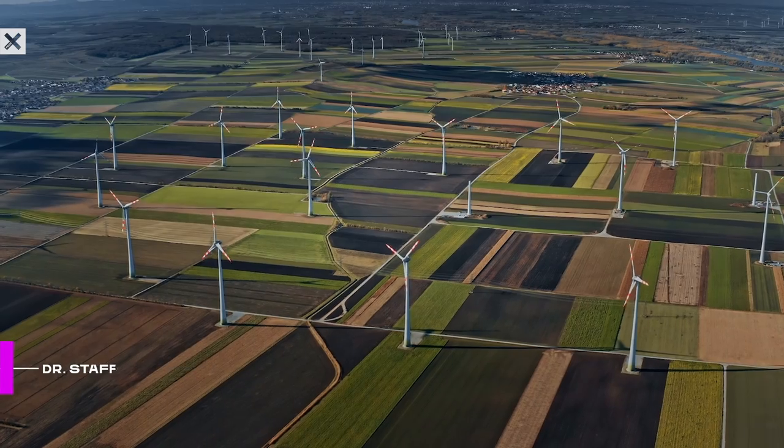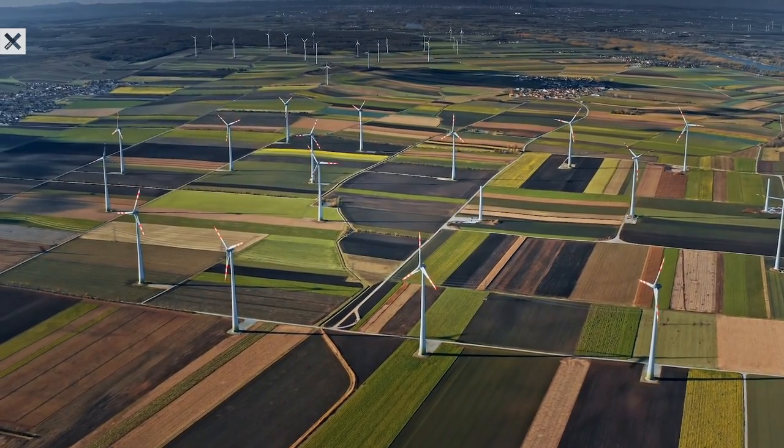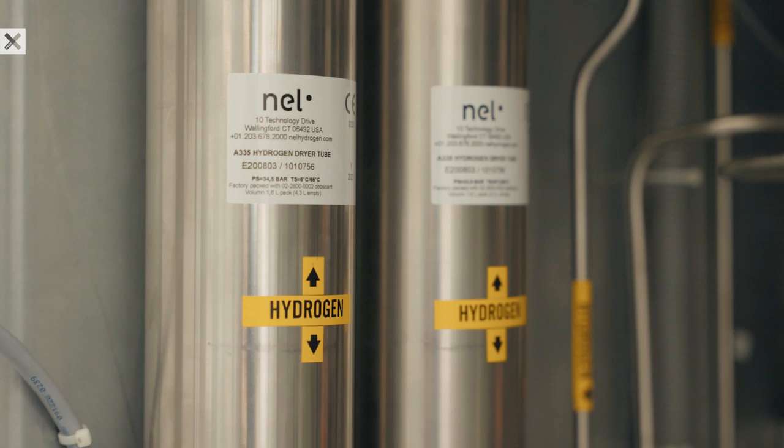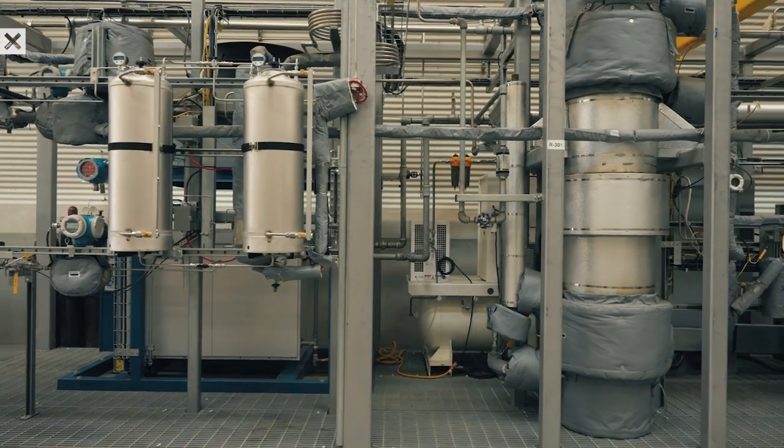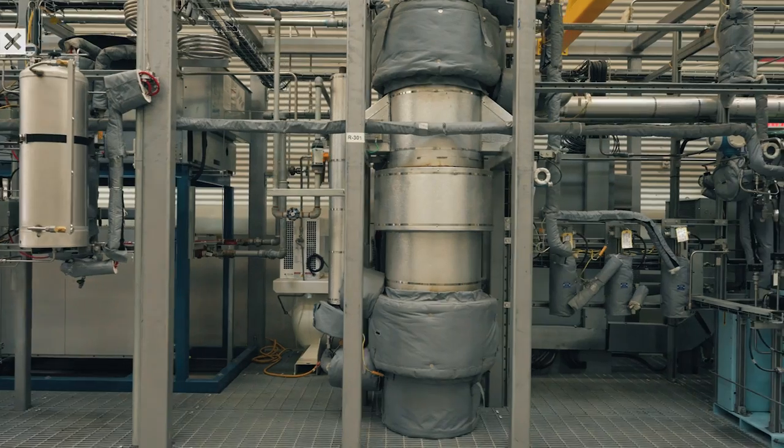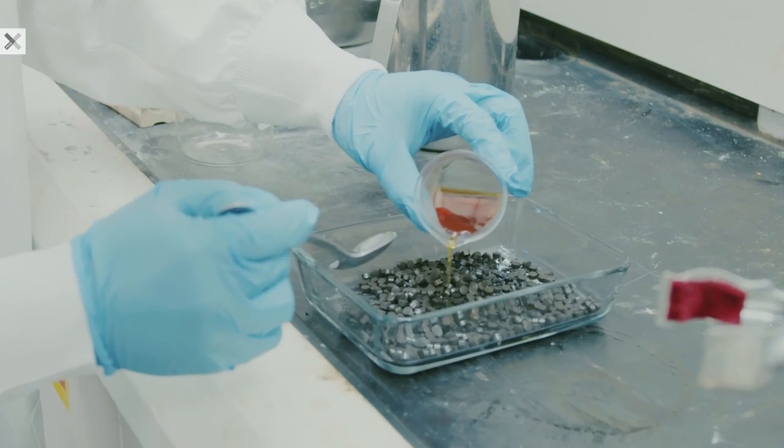So our process starts with renewable electricity. We use that renewable electricity to split water into hydrogen gas and oxygen gas. The hydrogen gas is combined with carbon dioxide, and we work together with partners to capture that carbon dioxide from a variety of sources, including the air. That carbon dioxide and hydrogen are combined in our reactor over proprietary catalysts, and that's kind of our secret sauce.